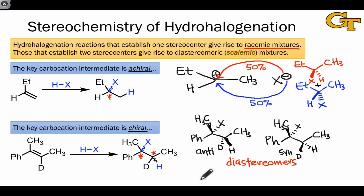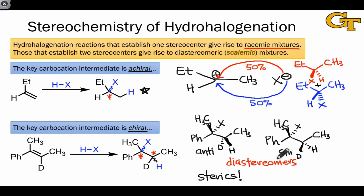Hydrohalogenation and hydration are unique in that they involve discrete carbocation intermediates formed from protonation of a double bond. So there's no intrinsic mechanistic preference for the syn or anti products — it all comes down to sterics. The most important takeaway is that whenever a hydrohalogenation establishes one stereocenter, it will do so to give rise to a racemic mixture.